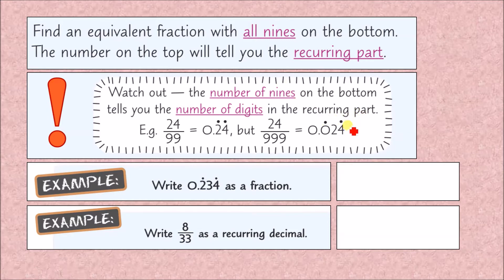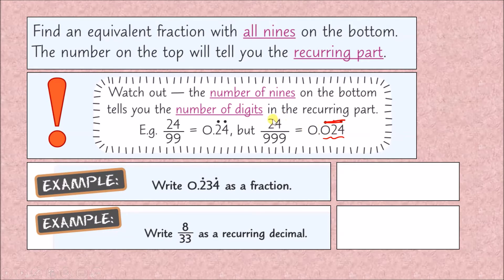For notation, some people use dots — I personally put dots on all recurring digits. Others use a bar, which also works. So 0.024 with three digits recurring comes from 024 over 999. If it was 3 over 999, the recurring value would be 0.003. That's the idea.